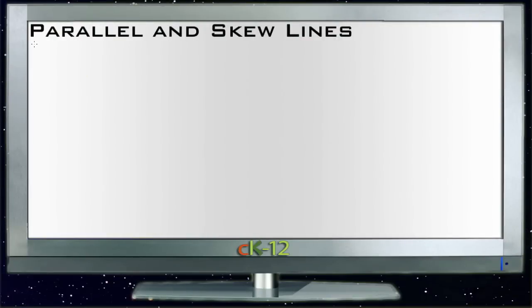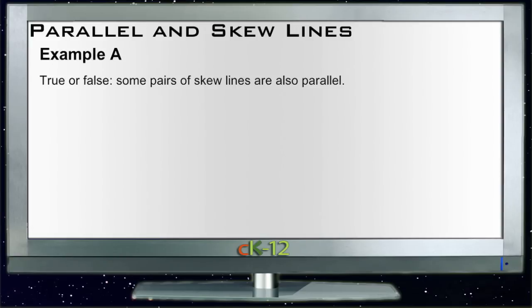All right, let's take a look at some of the examples for parallel and skew lines. Our first example A says true or false: some pairs of skew lines are also parallel. Obviously this one, if you follow the lesson, you probably recognize right away.